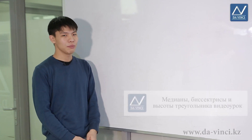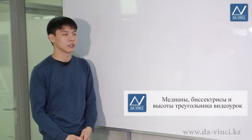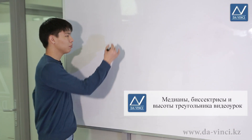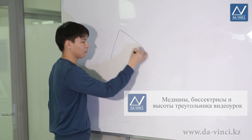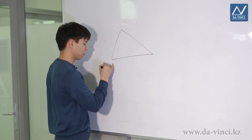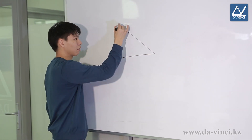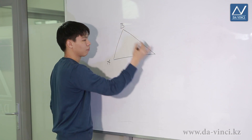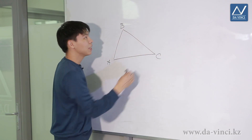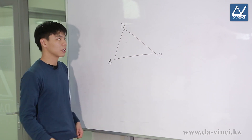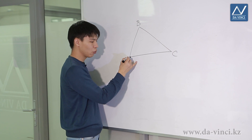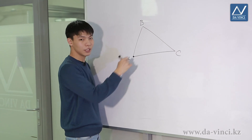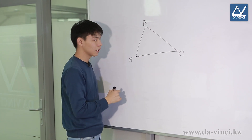The topic of the video lesson is medians, bisectors and altitudes of a triangle. Let's take a look at some triangle ABC. The median of a triangle is the line segment that connects the vertex of the triangle to the midpoint of the opposite side.